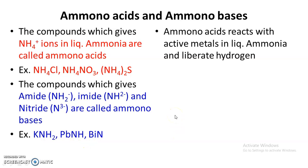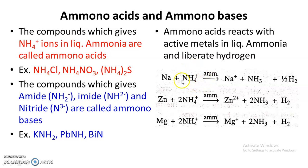Amino acids react with active metals in liquid ammonia and liberate hydrogen gas. This reaction is analogous to mineral acids like HCl, H2SO4, or HNO3 reacting with active metals to evolve hydrogen. Similarly, amino acids also react with active metals to liberate hydrogen gas. For example, sodium treated with ammonium salt in liquid ammonia evolves hydrogen gas; zinc and magnesium also react with ammonium salts to produce hydrogen gas. This confirms that any substance able to produce ammonium ion is acidic.